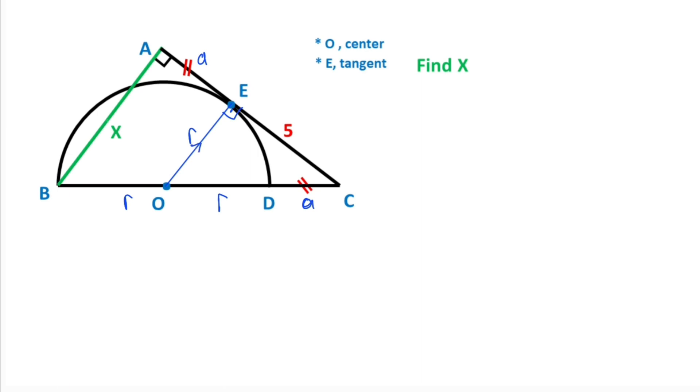We know that these two sides are parallel because of the 90 degrees. That means we have two similar triangles. Triangle OEC and triangle BAC are similar.